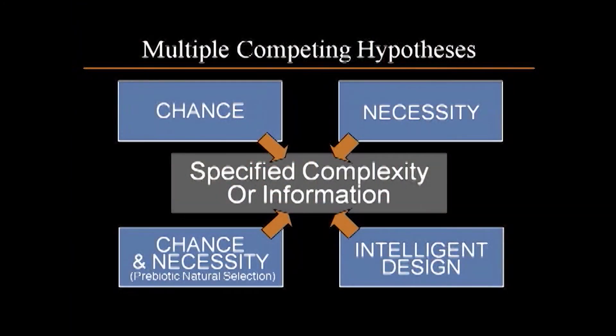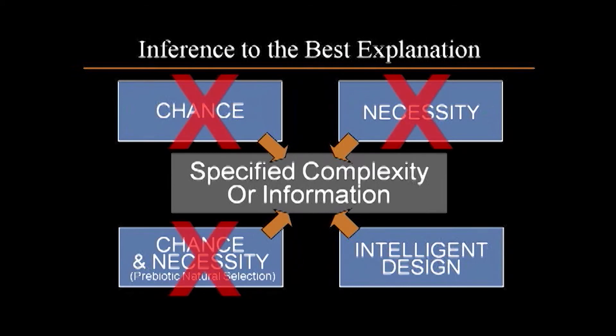And I suddenly thought: what if we applied that to the question of the origin of information? What is the cause now operating that produces digital code? What's the cause now operating that produces information in any form we find it? And I realized there's only one. It's intelligence. I'd investigated the other proposed causes, and from experience I knew they didn't work. When you got into the origin of life literature, it turned out there were big problems trying to make chance or necessity or the combination produce information. But when you just referred to your common sense, your ordinary and repeated experience, there was a cause that jumped right out at you — and that was intelligence.